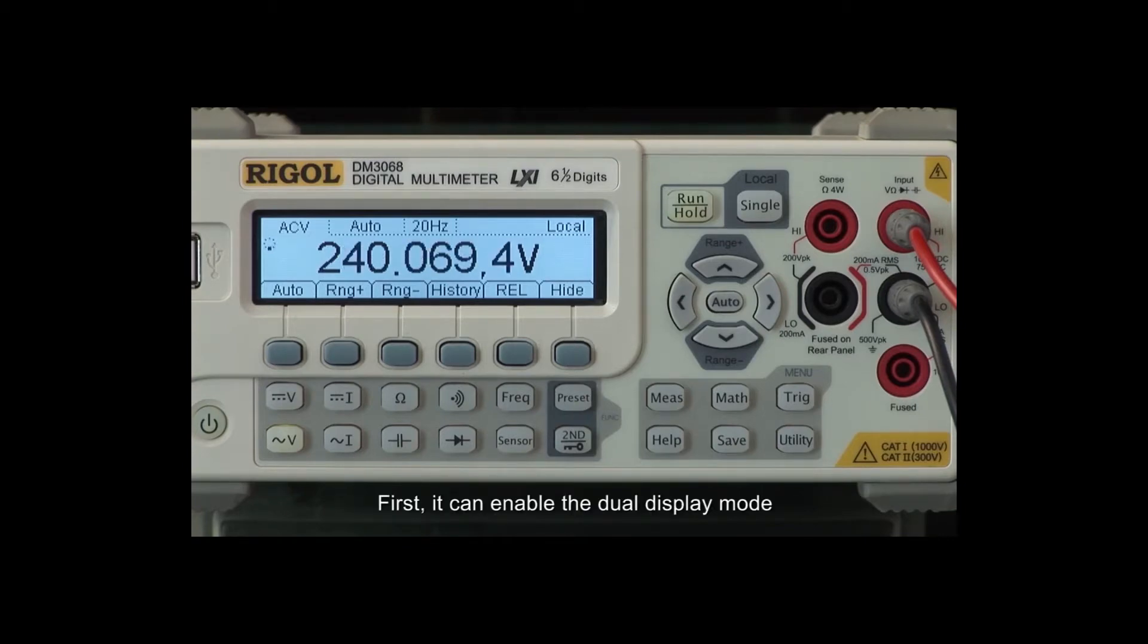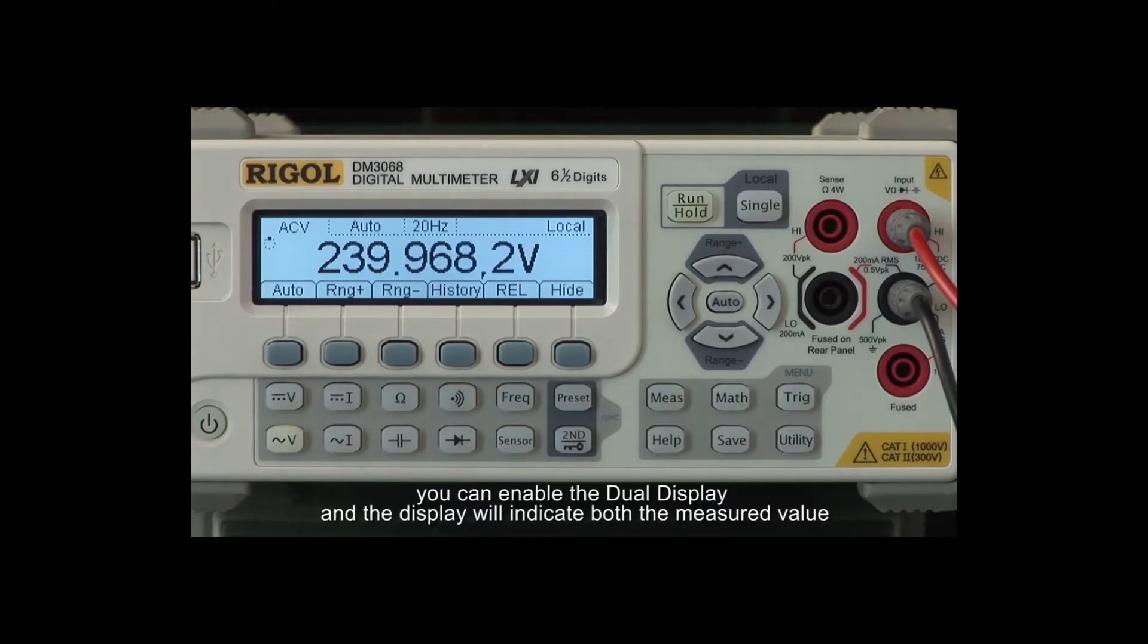First, it can handle the dual display mode. Second, it can quickly store the current instrument settings and lock the panel before the setting is recalled. Lastly, it can be used to quickly enter the relative setting interface. When you are measuring AC volts or AC current, you can enable the dual display, and the display will indicate both the measured value and the frequency of the input AC signal.